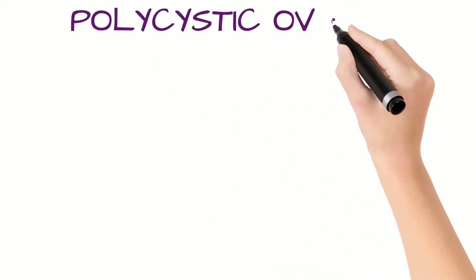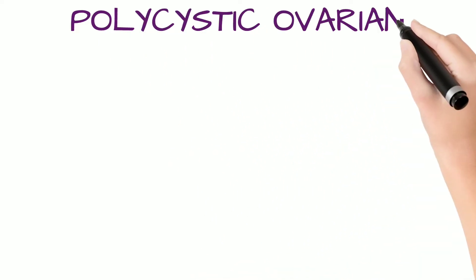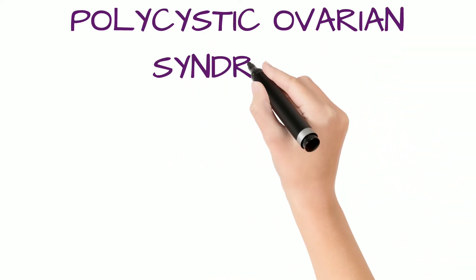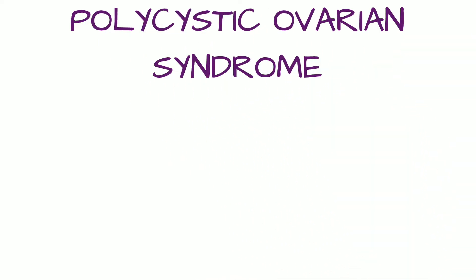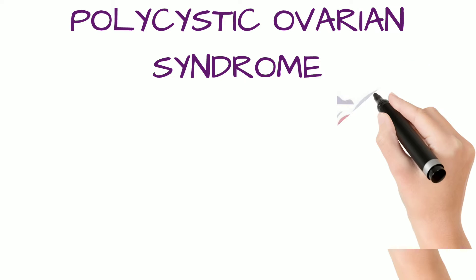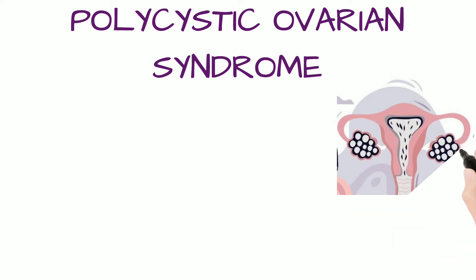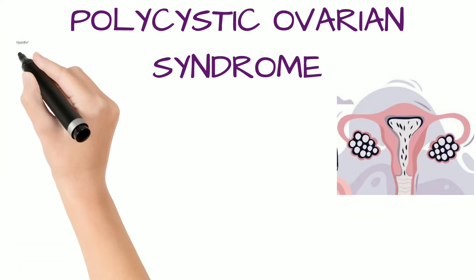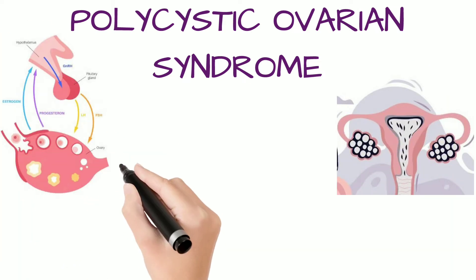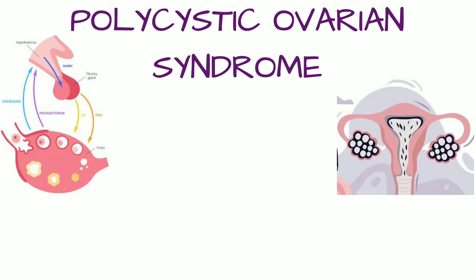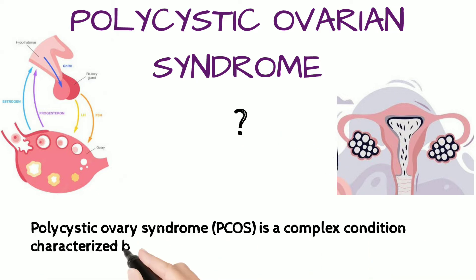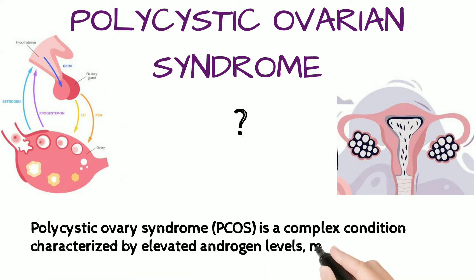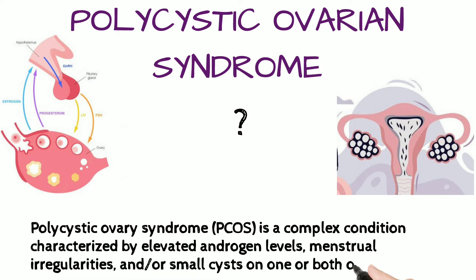Hello there everyone, this is 5 Minutes Medicine and today we're going to talk about polycystic ovarian syndrome, which is a complex condition associated with hormonal imbalance and is characterized by menstrual abnormalities, multiple cysts, etc.